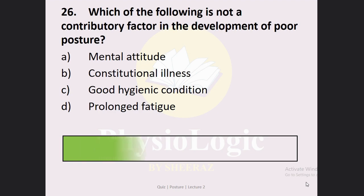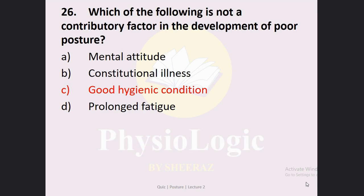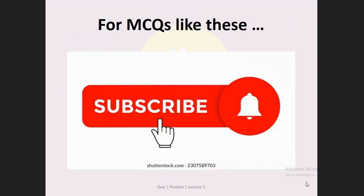Next MCQ: Which of the following is NOT a contributory factor in the development of poor posture? Option A: mental attitude. Option B: constitutional illness. Option C: good hygienic conditions. Option D: prolonged fatigue. The correct option is Option C: good hygienic condition. Good hygienic condition can be a factor in the development of good posture, not poor posture. Mental attitude, illness, and prolonged fatigue can all be contributory factors in the development of poor posture.